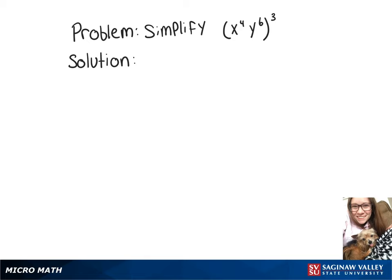To simplify x to the 4th times y to the 6th raised to the 3rd power, we need to multiply our exponents. So we'll do x to the 4 times 3 times y to the 6th times 3. And that gives our final answer, x to the 12th times y to the 18th.